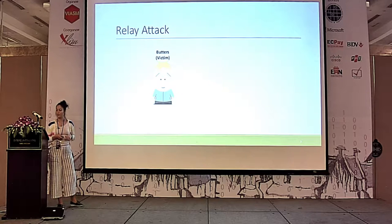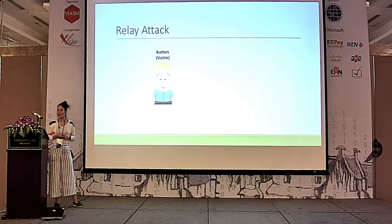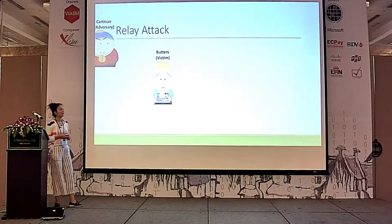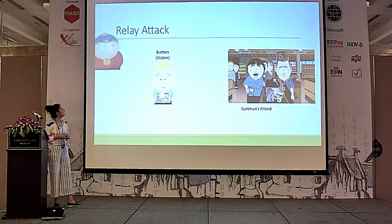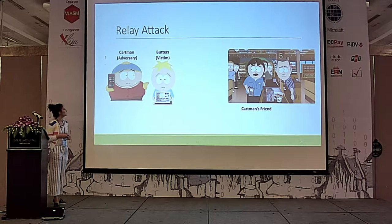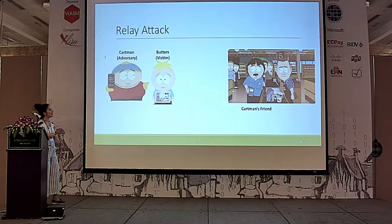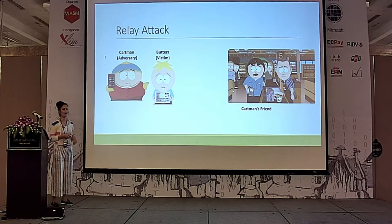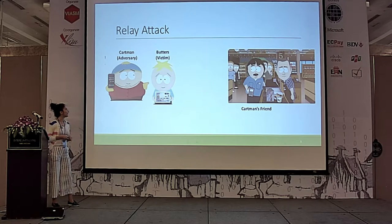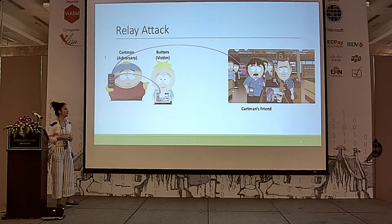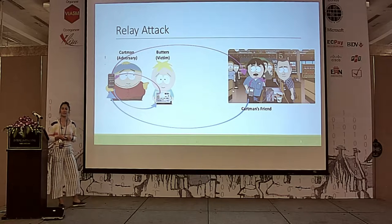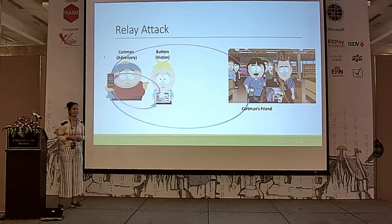Let me explain with the following scenario. Here we have Butter, our victim, and Cartman, our adversary. Butter has a credit card, and Cartman comes close to our victim with his phone. Cartman also has friends in the supermarket waiting for his signal. Cartman receives the signal from Butter's credit card and relays it to his friend's phone, which relays it to the payment terminal, and the same happens in reverse. In the end, Cartman is able to make a payment with Butter's credit card without his permission.